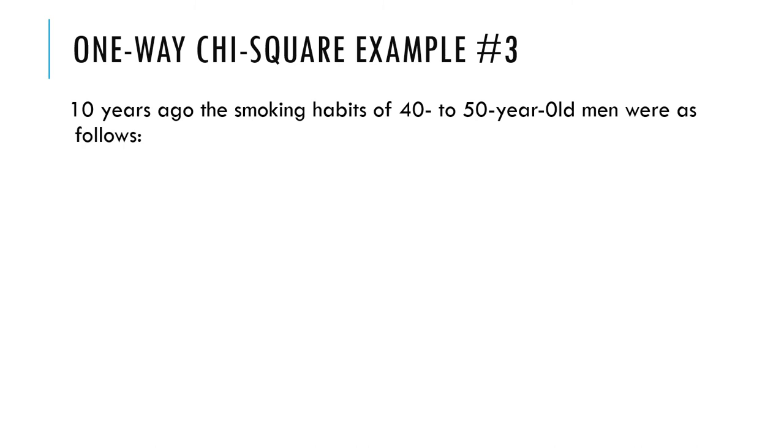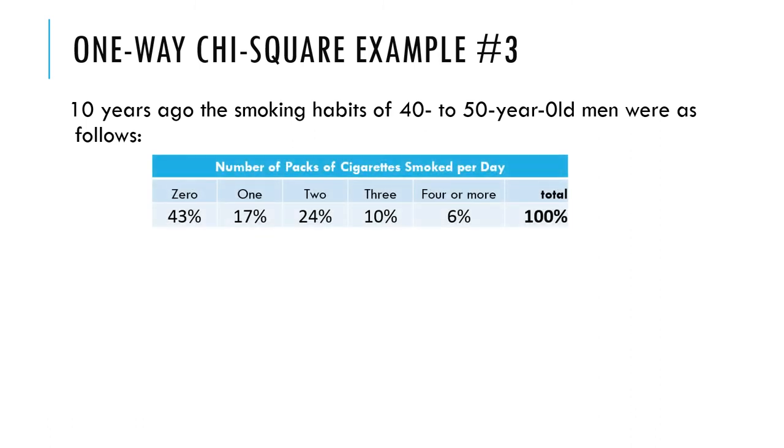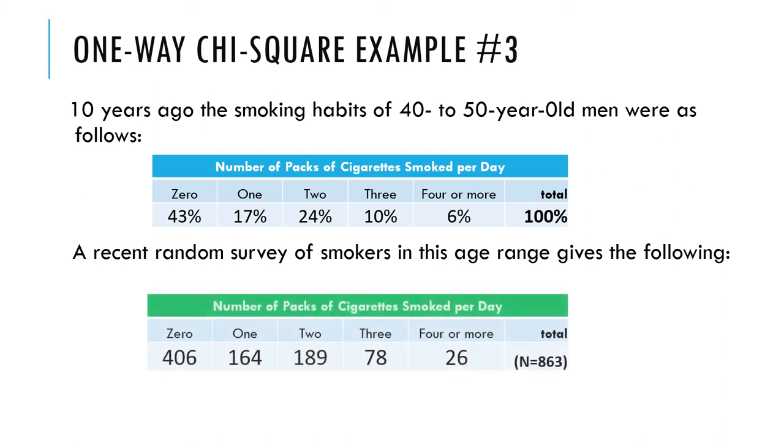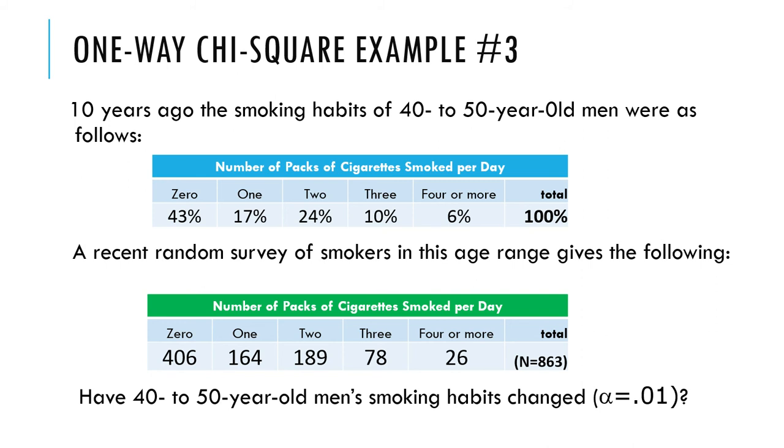Let's do another one. I think this came from some real data. 10 years ago, the smoking habits of 40 to 50 year old men were as follows. When they were asked in a survey, in a very large study, how many packs of cigarettes do you smoke per day? A little less than half said they don't smoke. 17% said they smoked one pack, 24% said two packs, 10% said three packs, 6% said four or more packs. Well, in a recent random survey of smokers in this age range, we get these numbers. 406 saying 0, 164 saying 1, out of an N of 863. So have 40 to 50 year old men's smoking habits changed?